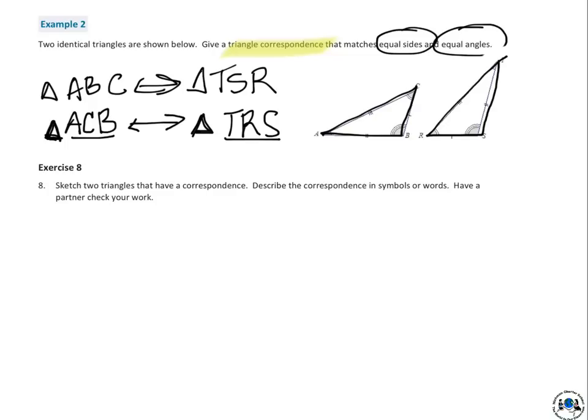Okie doke. So yeah, let's move on here. See, now you're going to do some sketching of your own. All right, you have a sketch, two triangles that have a correspondence to describe the correspondence in symbols or words, and then have a partner, whatever, your mom or whomever to check, to check your work. So again, you don't need, this doesn't need to be perfect, but if you do have something there to help you out, help you draw these, a ruler and such, protractor if you want to, but anyway, the idea, the most important, the thing we're really concerned with is just using those symbols or words to describe correspondences.